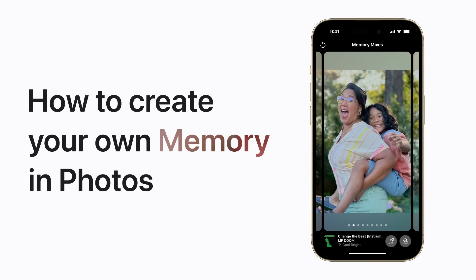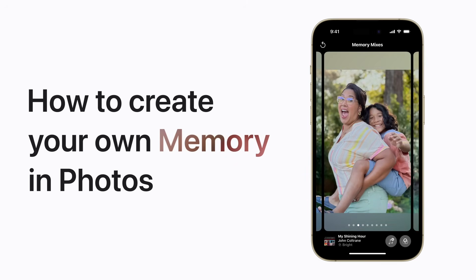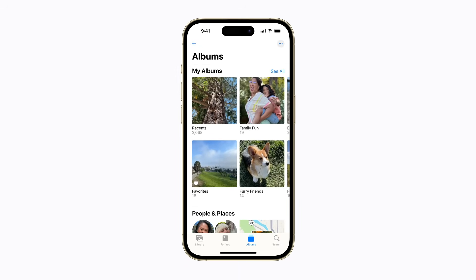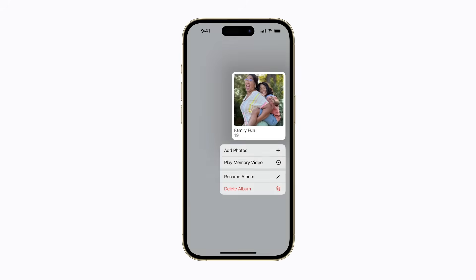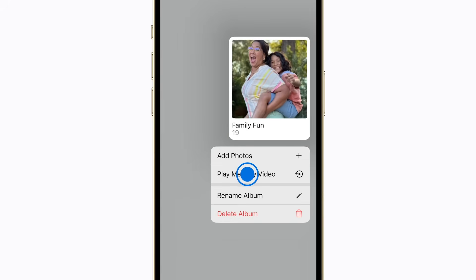You can create and customize your own memory in Photos with music, different looks, and more. Here's how. In Photos, touch and hold an album you created, then tap Play Memory Video.